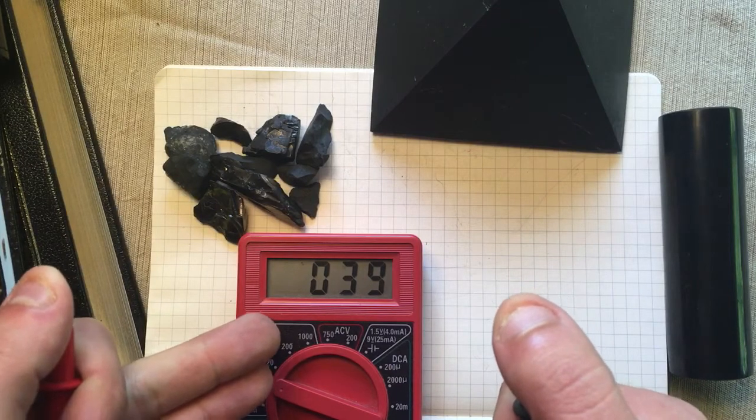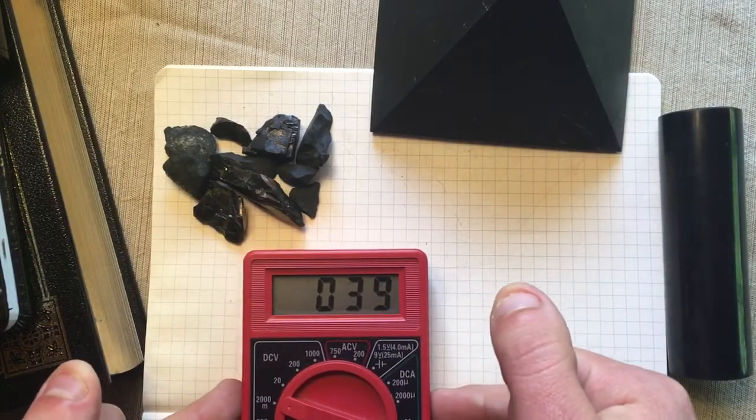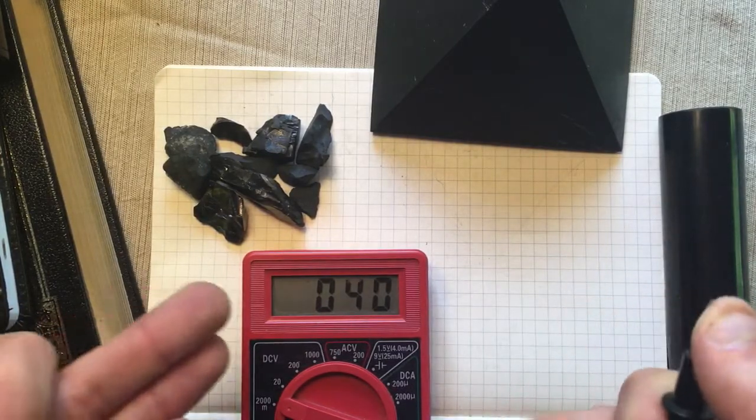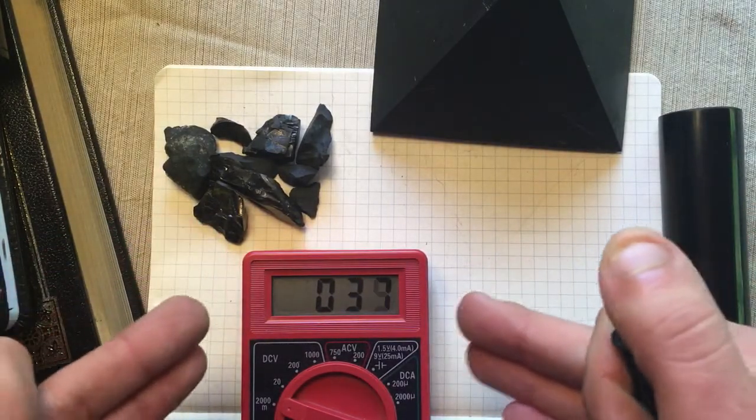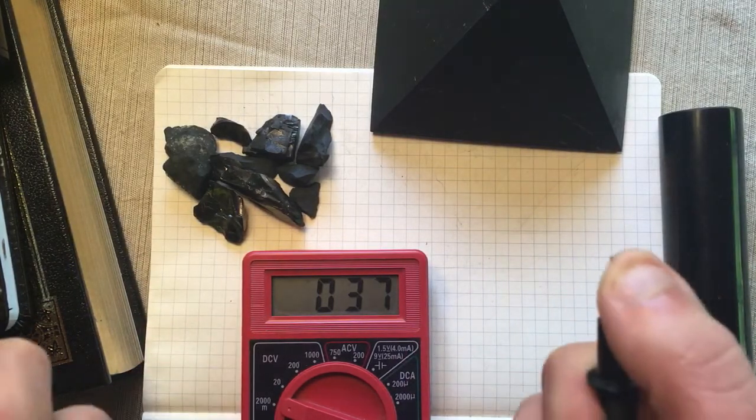I'm getting a baseline of about 30 to 40 millivolts. That's the condition right now. It's the morning, I haven't showered yet, so there's some sweat and some salt on my skin, which could be a reason for a slightly higher than normal baseline reading.